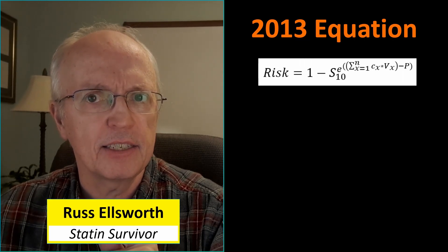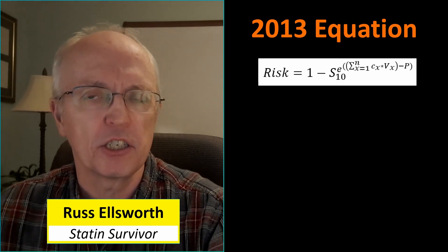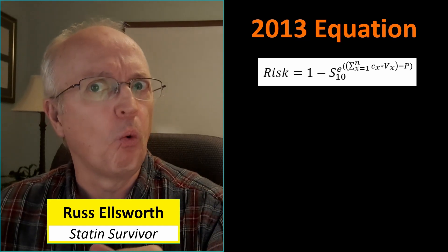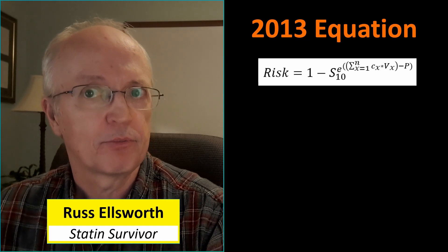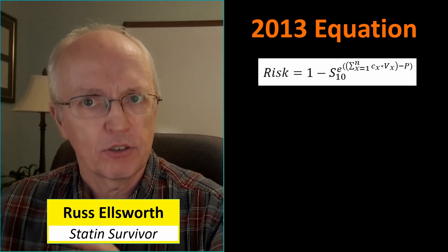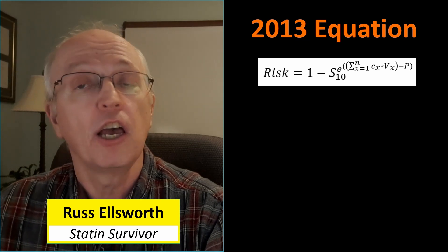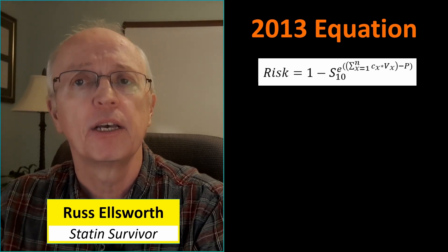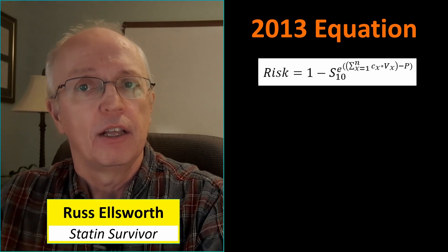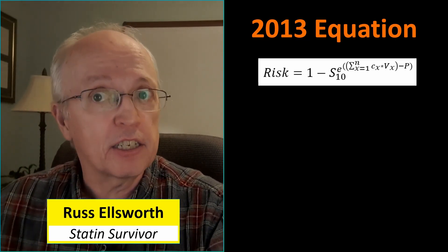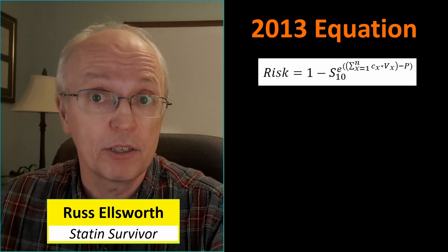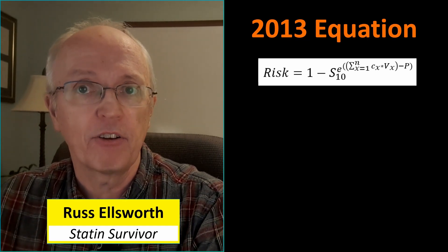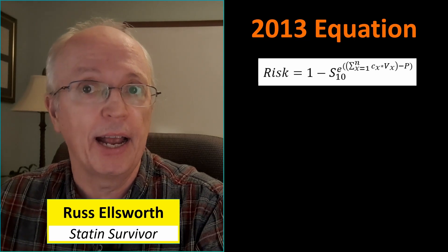The 2013 equation is the one the ACC/AHA has on their website — essentially this equation, and it's the one known to be up to 80% too high. The equation looks very complicated if you're not used to it, and it's not written down clearly in any paper. I had to read the guideline excerpt three or four times to extract it, then programmed it into an Excel spreadsheet and compared it to what the calculators give — it was spot on.